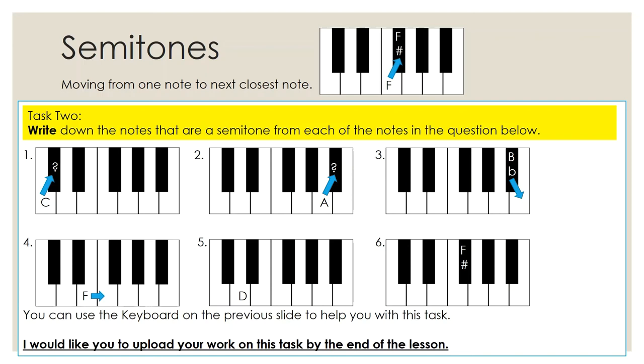F, we've got for question four, what's the semitone away from that? What is the arrow pointing towards the closest note? Then we've got 5D, which doesn't have an arrow, so you've got to use what you've learned from previous questions. And then six, we have F sharp. Again, what's the semitone away from F sharp? So that's for task two, show your understanding of semitones.